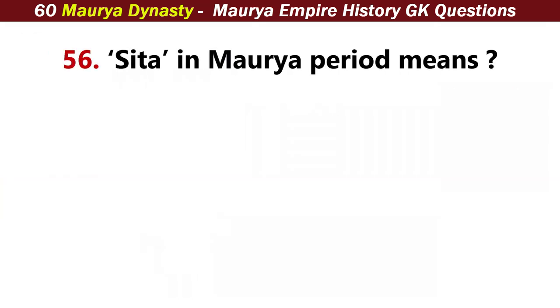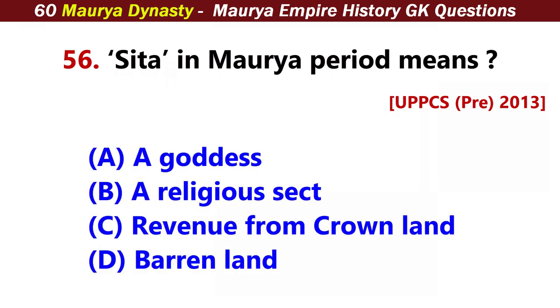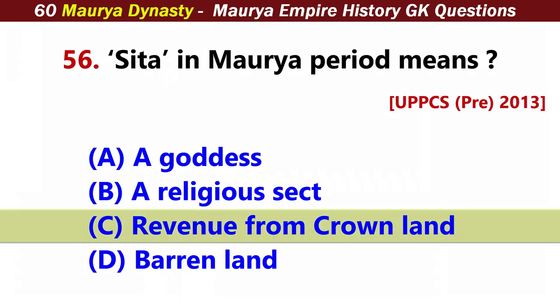Sita in the Mauryan period means? Answer C: Revenue from crown land.